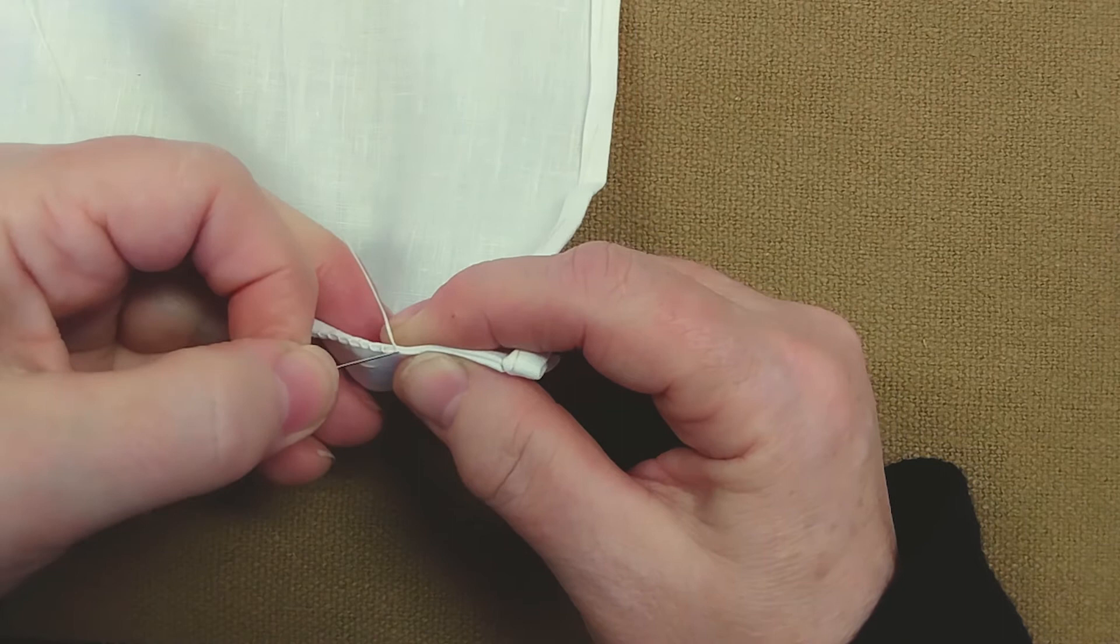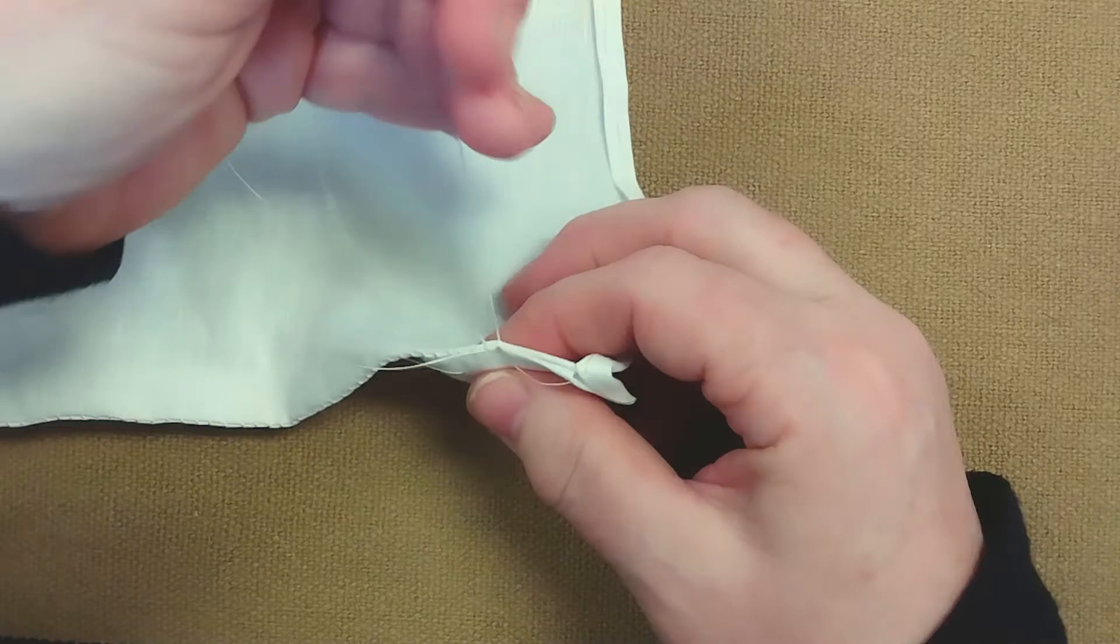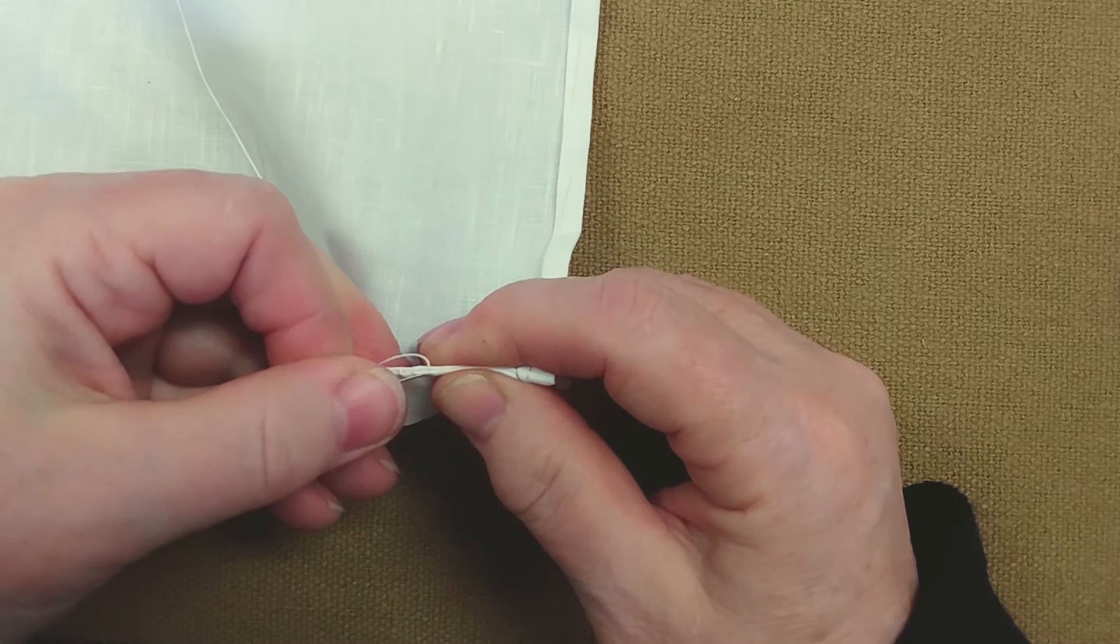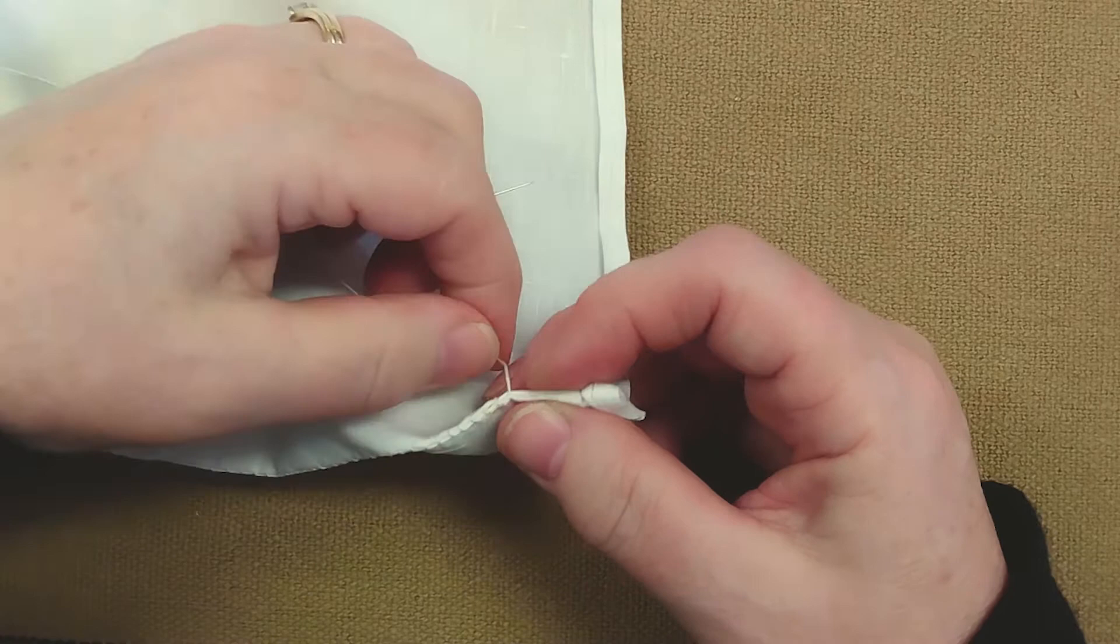And then straight across and scooch down just an eighth of an inch, turn your layers and poke it through across. So we're hiding the bulk of the thread in between the hem layers and just catching a little bit on the front side.